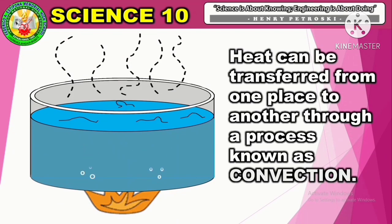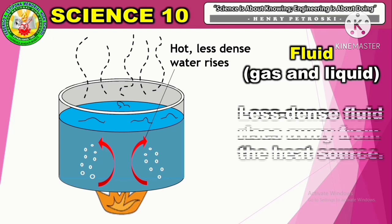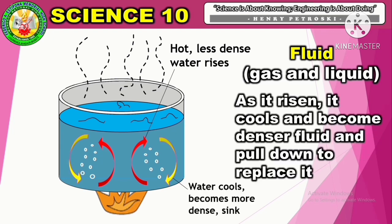In our activity, you observed that heat can be transferred from one place to another through a process known as convection. This type of heat transfer is usually observed among fluid molecules. Fluids expand and become less dense when heated. In effect, less dense fluid rises away from the heat source. As it rises, it cools down, becomes denser, and sinks to replace the hot fluid. This continuous process is called convection current.